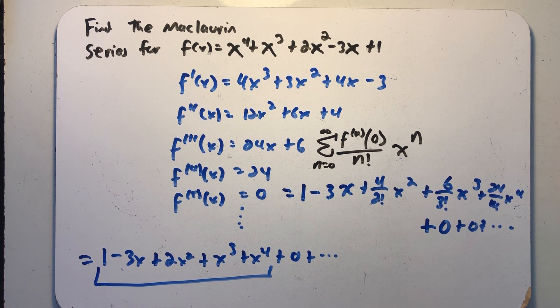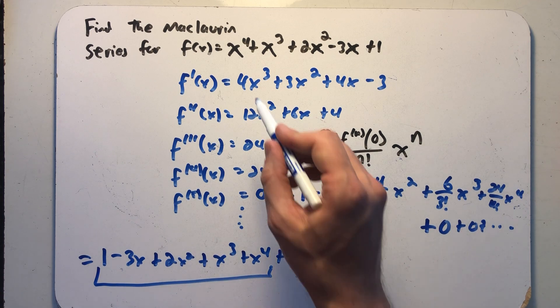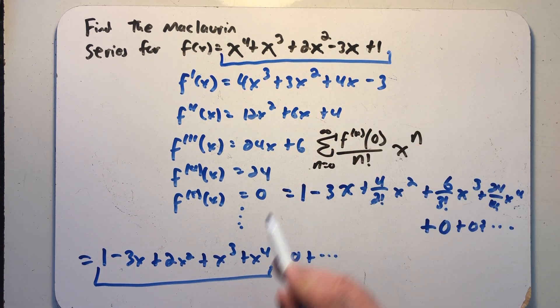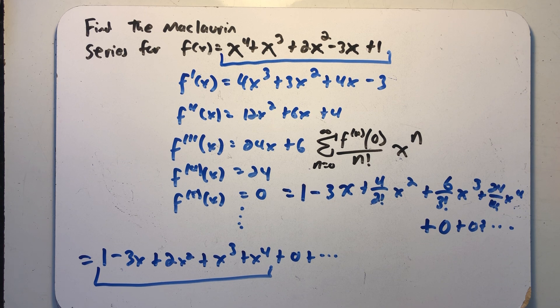The Maclaurin series for my polynomial f is my polynomial f. Oh, that makes sense. If I want to represent a polynomial with a polynomial, I'll just use it. The Maclaurin series for this polynomial is, in fact, itself plus a whole lot of zeros forever and ever.